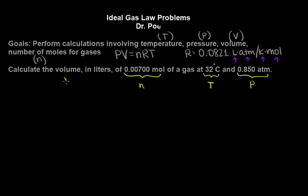And our volume is our unknown, and we need that in liters. Okay, so from our equation, PV equals nRT, we don't know V, we know P, we know N, we always know R, it's 0.0821 liter atmospheres per Kelvin mole, and we know T.